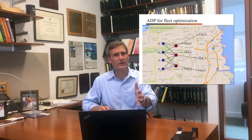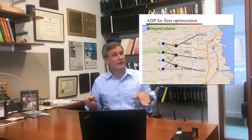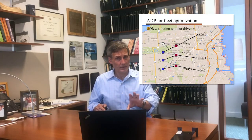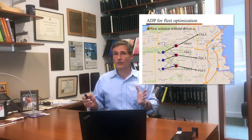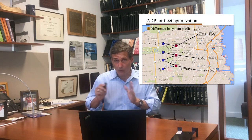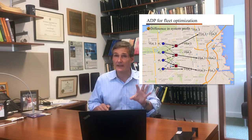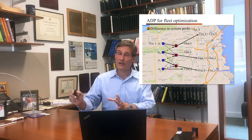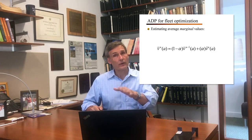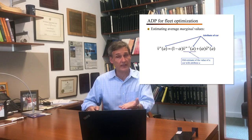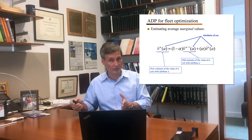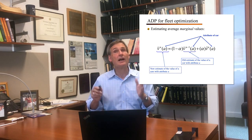How do we compute the downstream values for the fleet? We solve the assignment problem, assigning three drivers to three loads — the fourth driver has nothing to do and stays put, each with a downstream value. Then we remove the first driver and re-solve. The change in total contribution for the whole system is the marginal value of that driver with attribute a1, which we call v-hat. This is the difference in total contribution with and without the driver, and we apply the same smoothing as before.